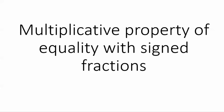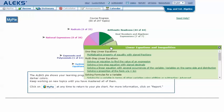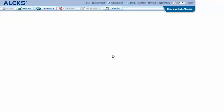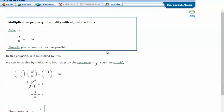Multiplicative property of equality with signed fractions in ALEKS. Mouse over the light green slice for linear equations and inequalities to reveal the drop-down list of topics. Click on multiplicative property of equality with signed fractions. Here's an example problem: solve for u, 15/8 equals negative 5 times u. Let's click explain.